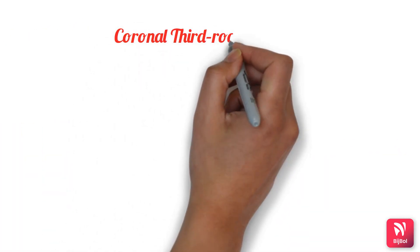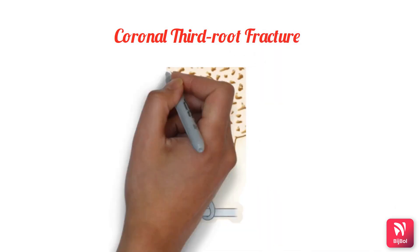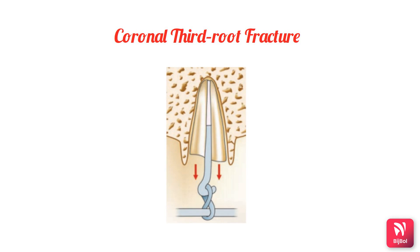For coronal third fractures, the prognosis is poor because it is difficult to immobilize the tooth, and constant movement also prevents repair. If the fracture is at or near the alveolar crest, root extrusion is indicated. The coronal segment is removed and the apical segment is extruded orthodontically to allow restoration of the missing crown-root tooth structure.